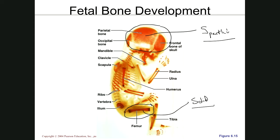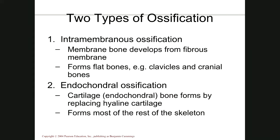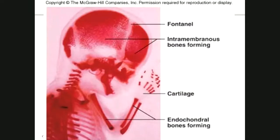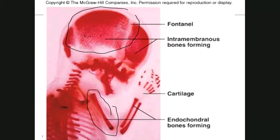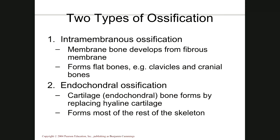If you look through the image, the solid-looking bones versus the speckled-looking bones indicate two different modes of bone development. If we blow that up you can see it clearly — little dots all in here versus completely solid. That's because bones develop two different ways. One of these ways is called intramembranous ossification. The word literally means 'inside a membrane.'